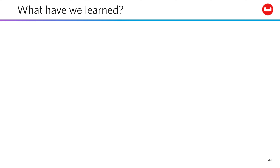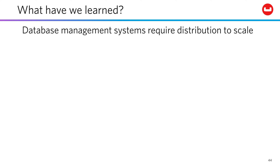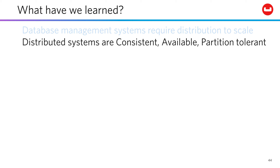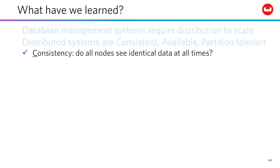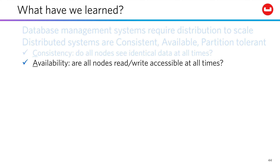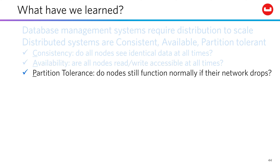So what have we learned here? Database management systems require a distributed architecture to reach cloud scale. You can analyze distributed systems by factors of consistency, availability, and partition tolerance. Consistency: do all the nodes see the same data at all times? Availability: are all nodes read-write accessible at all times? And partition tolerance: do the nodes still function normally if the network drops between some nodes?